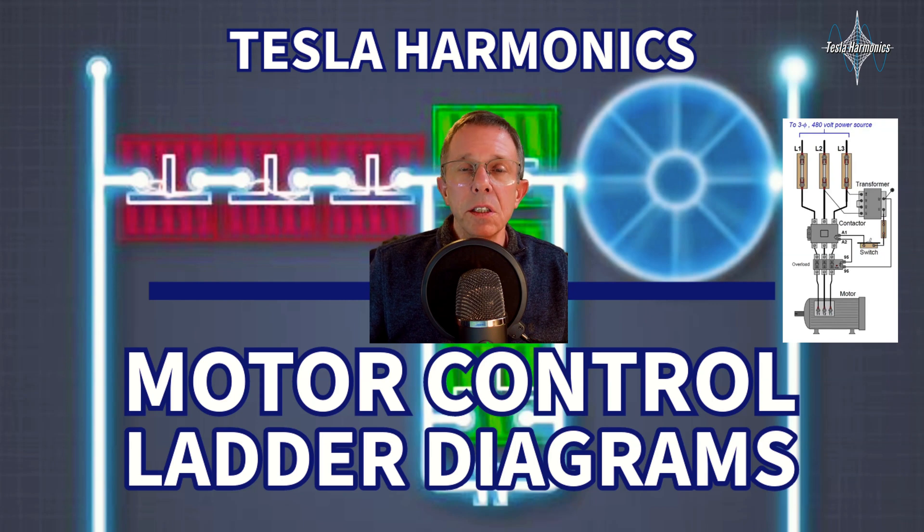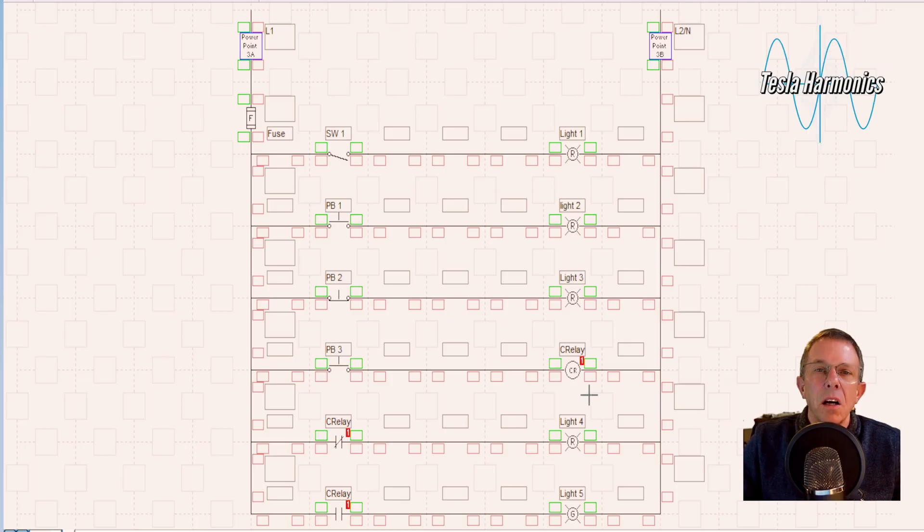Let's take a look at this ladder diagram that we have here. In this ladder diagram we have six rungs, and in those six rungs I have incorporated all the switches, the inputs and outputs that we have talked about so far in our previous videos.